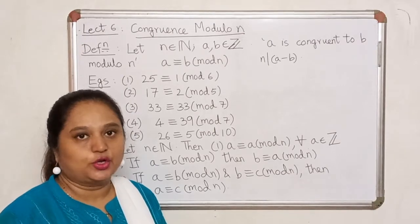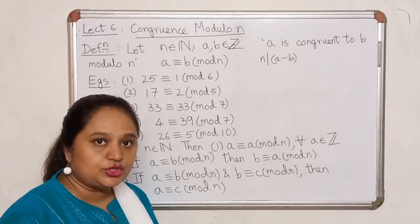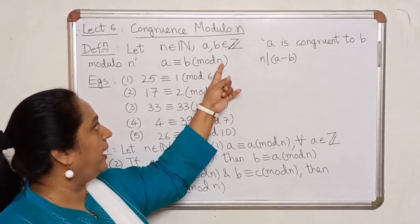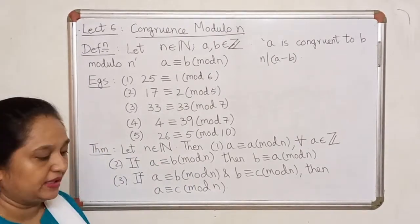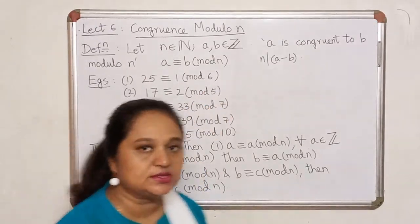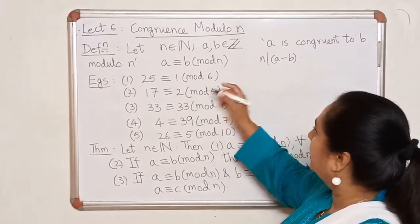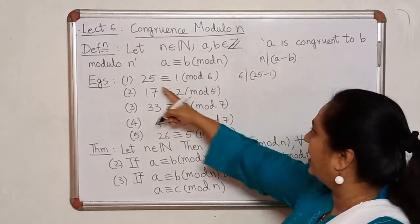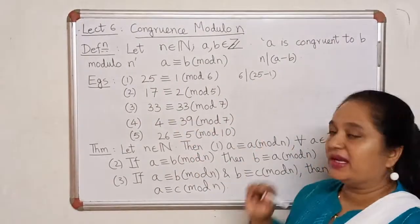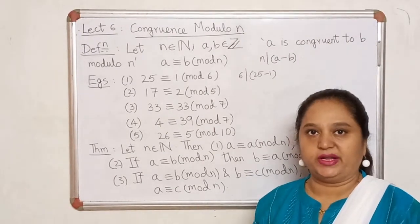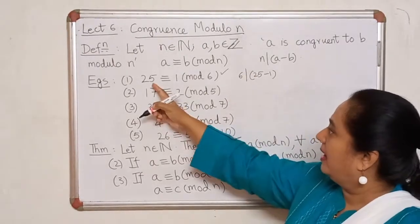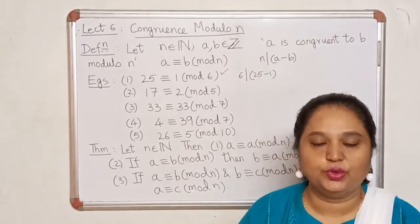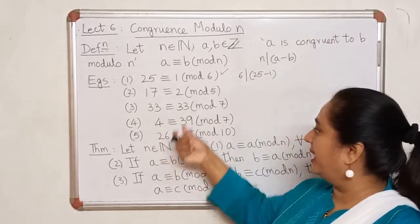The idea is very simple. To check whether a given integer a is congruent to a given integer b modulo n, all you need to do is check whether n divides a minus b. Here are a few simple examples. Let us check whether 25 is congruent to 1 modulo 6. I need to check whether 6 divides 25 minus 1. You could pause the video and check whether the remaining equations are satisfied.